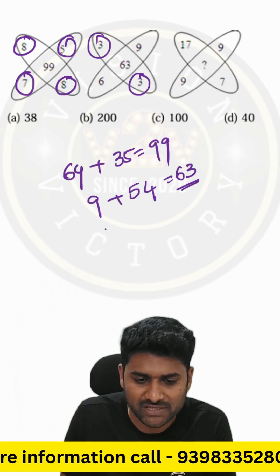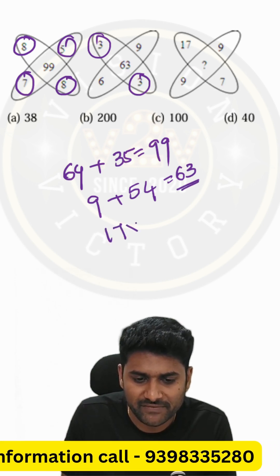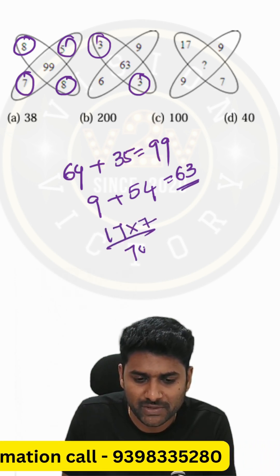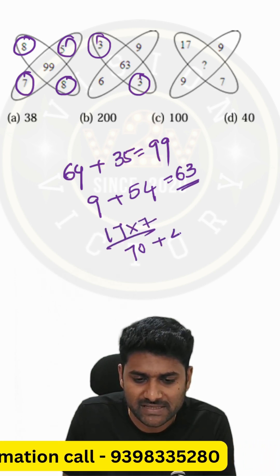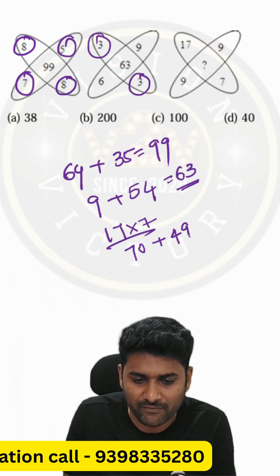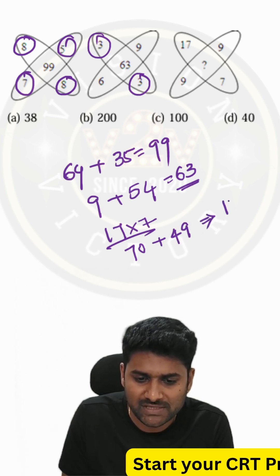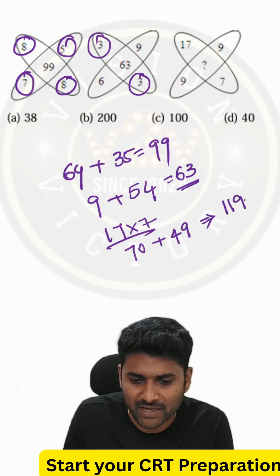Apply the same logic here. 17 into 7: 7 into 10 is 70, 7 into 7 is 49. If you go through the sum, it is 190.